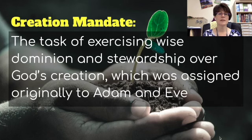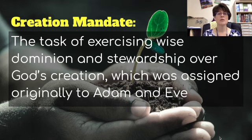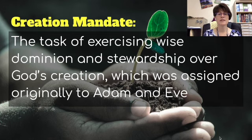The first thing I want to talk about is the creation mandate, because this really kind of governs everything that we do in science as Christians. This comes from Genesis Chapter 1, Verse 28, and it is the task of exercising wise dominion and stewardship over God's creation, which was assigned originally to Adam and Eve. We can't just do whatever we want with the earth because it belongs to God, but we need to use it responsibly. That is what the creation mandate says, and that's part of what we study in this class — how can we use creation responsibly?